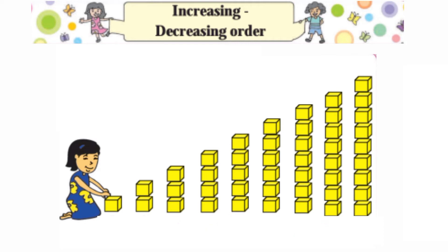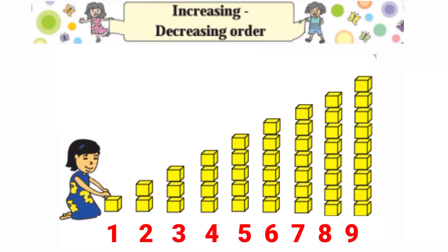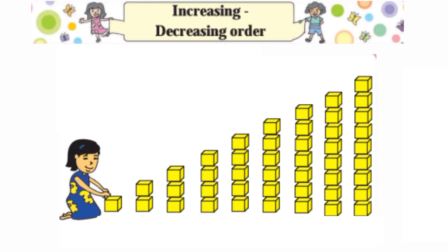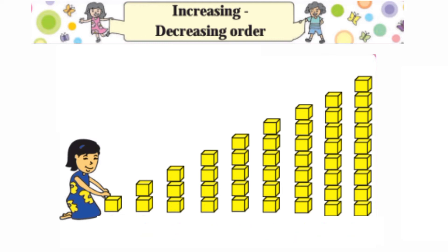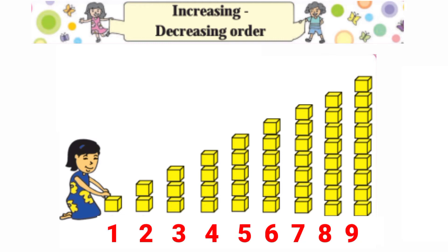This is called increasing order. In increasing order we arrange numbers from smallest to biggest. Here you can see the numbers one, two, three, four, five, six, seven, eight, and nine are in increasing order — chote se leke bade ki taraf ja rahe hain.